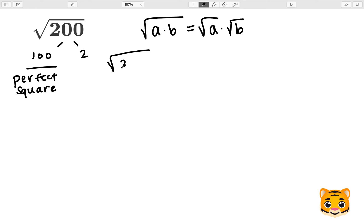Now let's rewrite the square root of 200 as the square root of 100 times 2. Using our math rule we just reviewed, we can now rewrite the square root of 100 times 2 as the square root of 100 times the square root of 2.